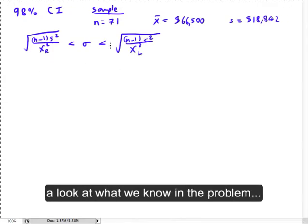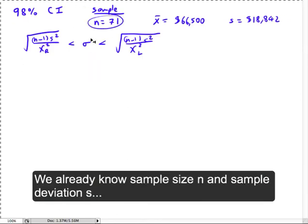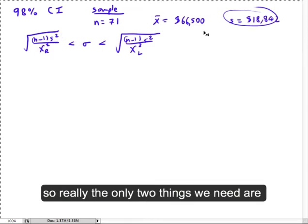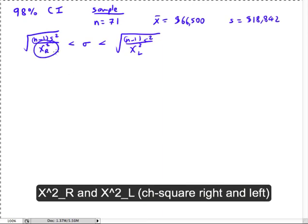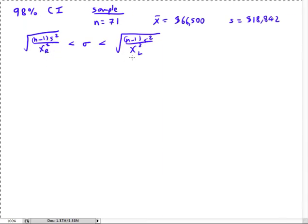Now if you take a look at what we know in the problem, you need n in the formula, and here's n, sample size. You need s in the formula, and here's s, sample deviation. So really the only two things we need here are chi-squared right and chi-squared left. That's what we really need to find in this problem.